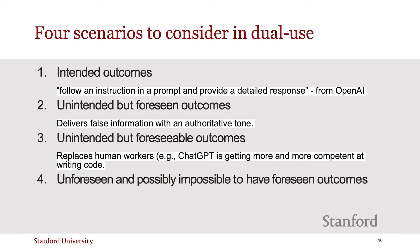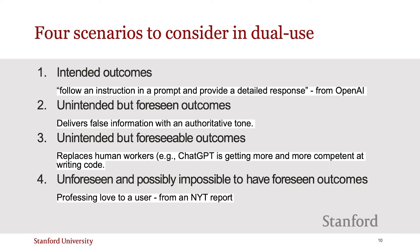The fourth scenario is unforeseen and possibly impossible to have foreseen outcomes. These are unintended outcomes that would have been unreasonable to foresee. For example, last year journalist Kevin Ruse reported that during his lengthy and personal conversation with Bing's chatbot, it professed its love to him. Microsoft was then in a flurry to determine the root cause of this erratic behavior and ultimately decided that it was a case of hallucination.